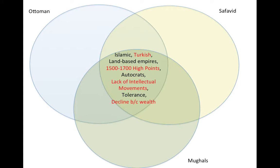I would say all three of the gunpowder empires, more so the Ottomans and the Mughals, did have tolerance — tolerance for different faiths, different peoples. Though they were of an Islamic religion, that doesn't mean they didn't have different sects, different languages, even different ethnicities inside their empires. The last major similarity is they all declined because their wealth began to decline. As the West rose and found naval power going around the world, wealth became centered in Western Europe, stripping their former position as the hub of the Silk Road.